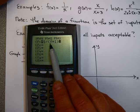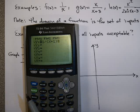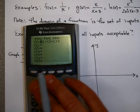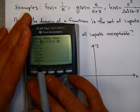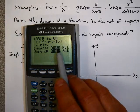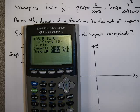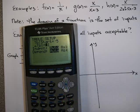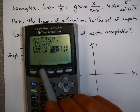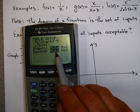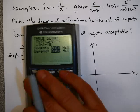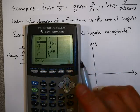The next step is to set your table by hitting second window. It asks for a starting value — I'll pick negative 5 and count by 1. The delta table means what you're counting by. Both settings should be on auto for now. Then hit second graph to see the table.